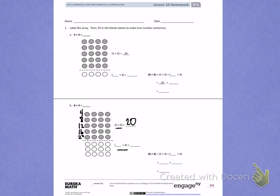In the bottom array, I see I have 1, 2, 3 rows. Each of those rows has 4 in them, so my missing number of rows is 3. I'm trying to solve the problem for 3 times 4.